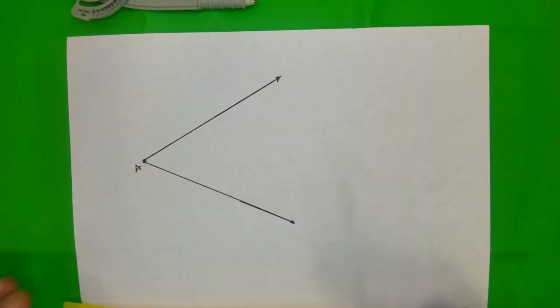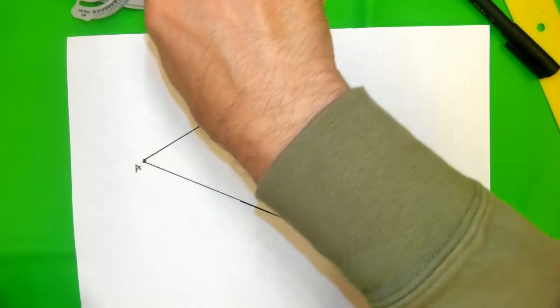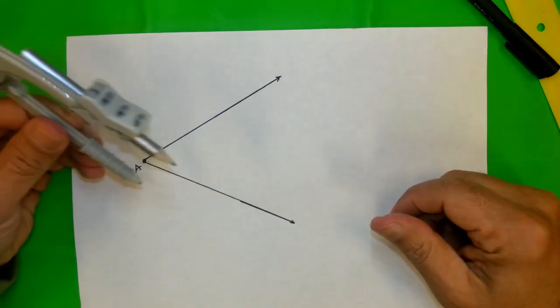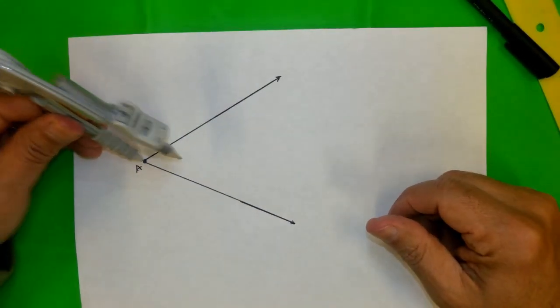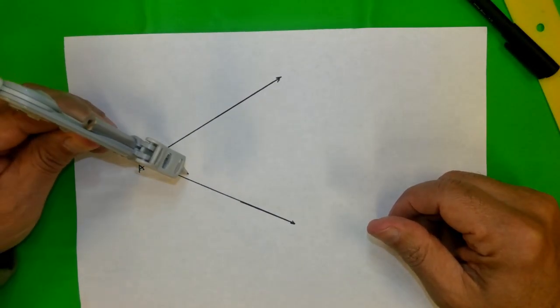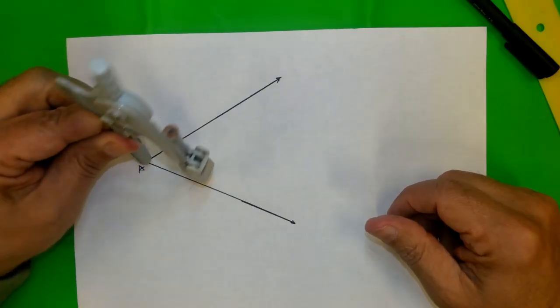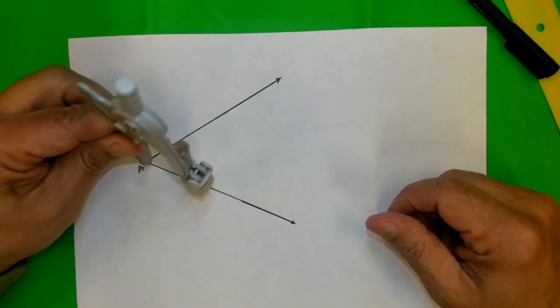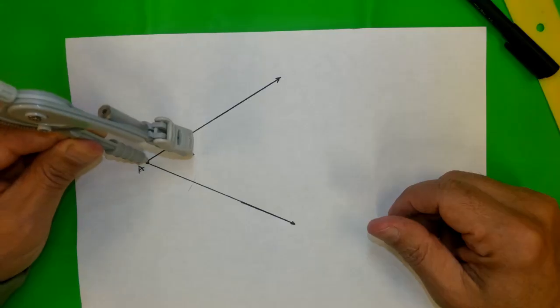We're going to construct the angle bisector. For that reason, I'm going to use the compass. And you see, I open the compass and I'm going to draw two arcs. One arc here and another one here.